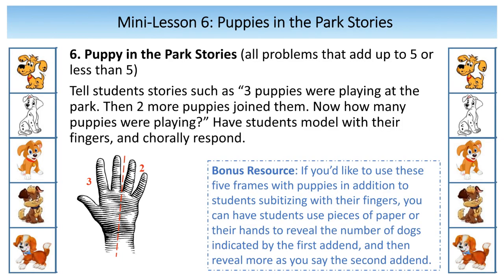For Mini Lesson 6, the idea is to start having students work with stories about any storyline you'd like. I usually do Puppies in the Park stories — it seems to entertain teachers and students. For Goal 1, you're going to be telling very simple stories. You don't have to add fancy details. Just very simple, with sums that add up to 5 or less than 5.